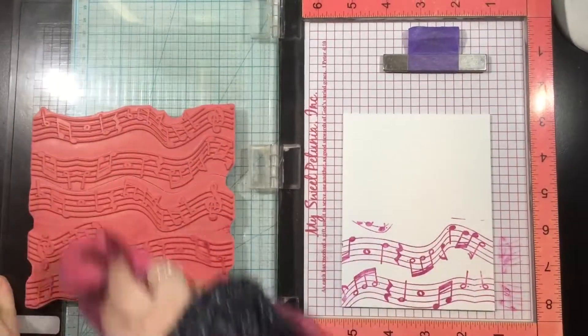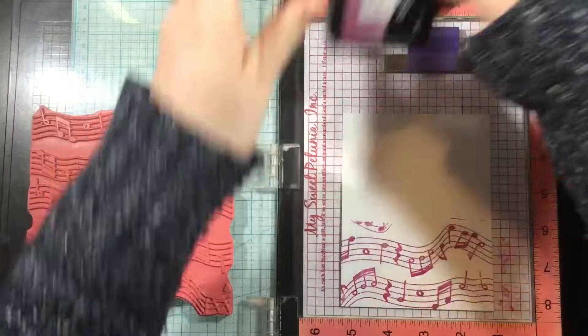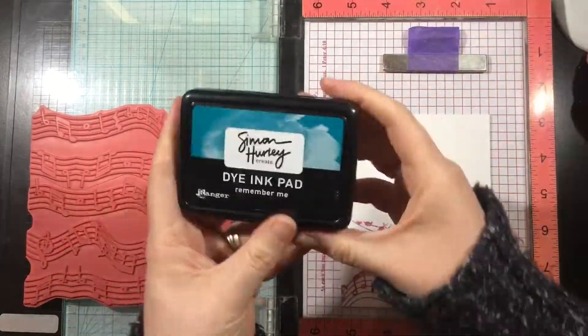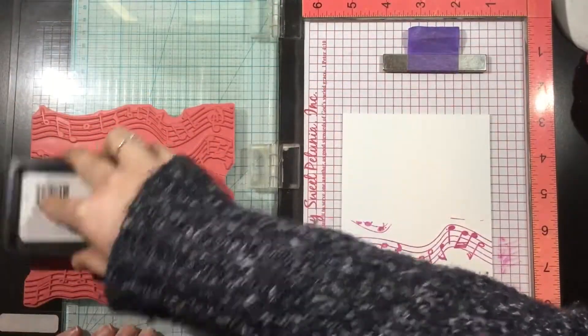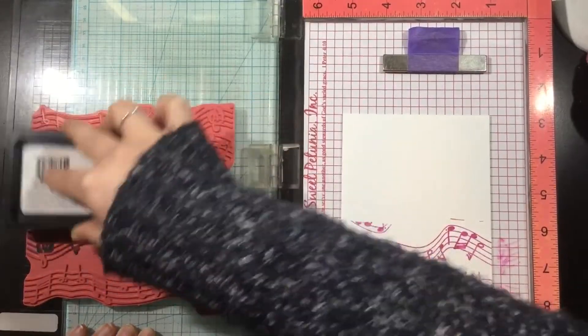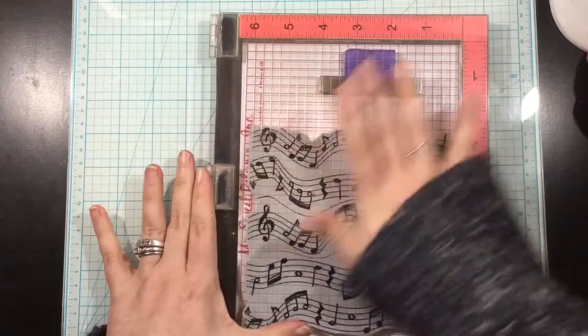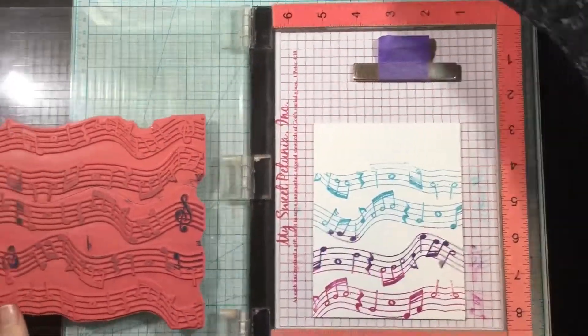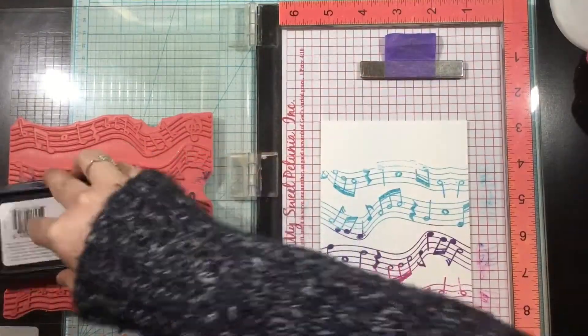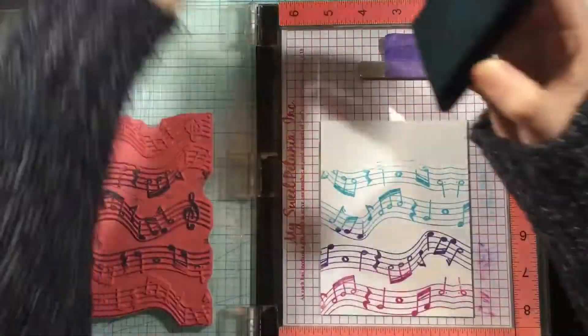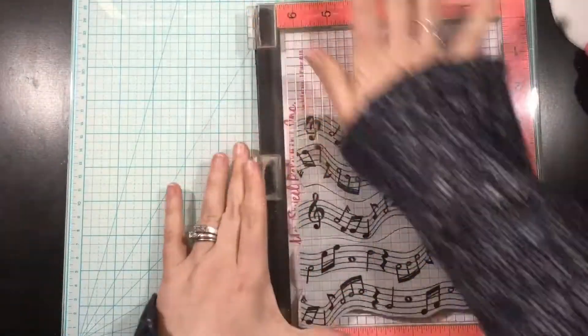To start, I'm inking it up in triple berry ink, just doing the bottom portion of that stamp. Then I'll come in with remember me ink and ink up the middle portion, making sure to overlap some of that triple berry ink. And you guys, look at that color purple that I created in the middle, overlapping the remember me and triple berry inks.